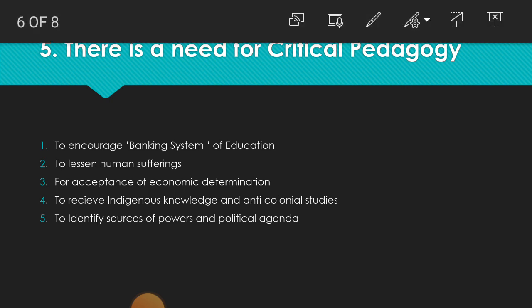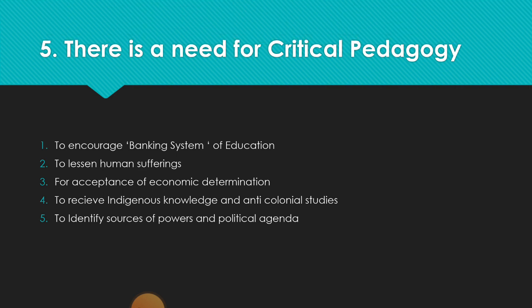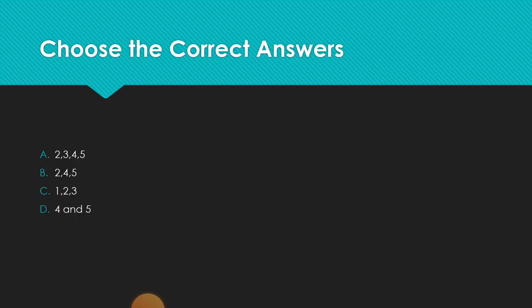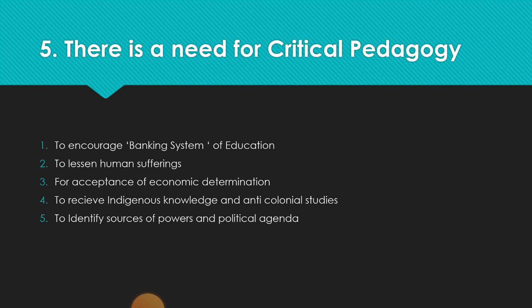The last question: There is a need for critical pedagogy — 1) to encourage the banking system of education, 2) to lessen human suffering, 3) for acceptance of economic determination, 4) to receive indigenous knowledge and anti-colonial studies, or 5) to identify sources of power and political agenda. Choose the correct answer: A) 2, 3, 4, 5 — B) 2, 4, 5 — C) 1, 2, 3 — or D) 4 and 5.